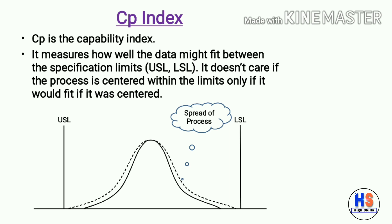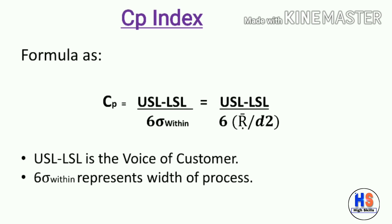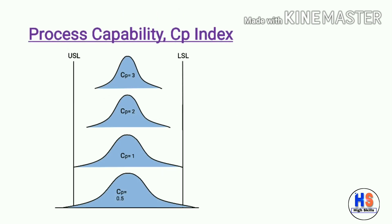You can see the spread of process between the USL and LSL. The formula for CP is: CP = (USL − LSL) / 6σ(within), where sigma is equal to R-bar divided by D2. R-bar is the average range and D2 is a constant whose value is given in the AIAG table. USL minus LSL represents the voice of the customer, and 6 sigma within represents the width of the process.